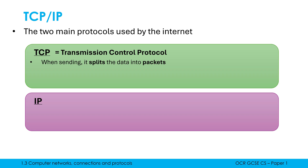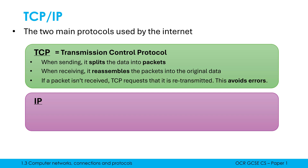As we talked about, packets can travel down different routes as they're being sent, and so when they arrive at the destination, they might not be in the same order they were sent in. So when receiving packets at the other end, TCP will reassemble the packets back into the original data. And if a packet isn't received in a set time period, TCP requests that it is retransmitted because it must have been lost in transit — there must have been some error, maybe a data collision.